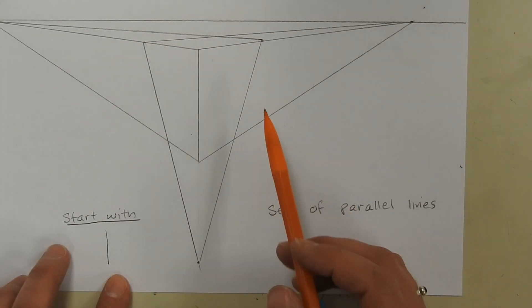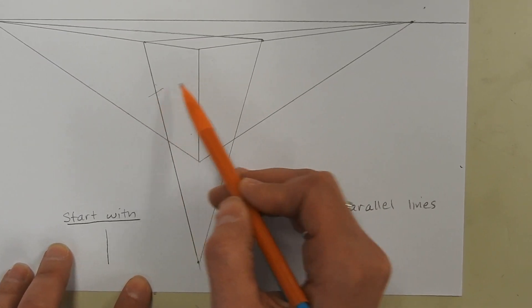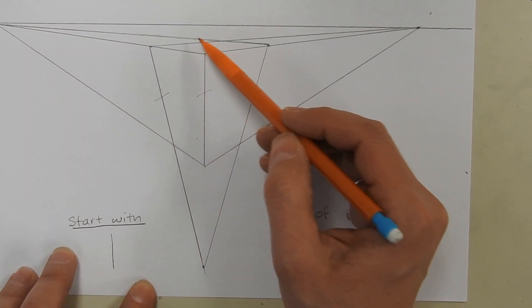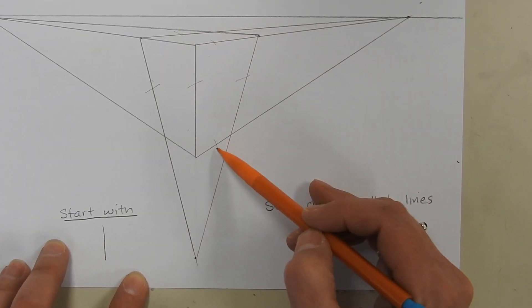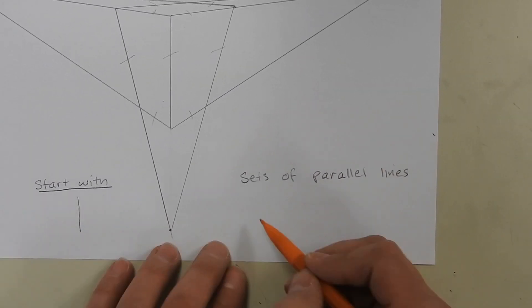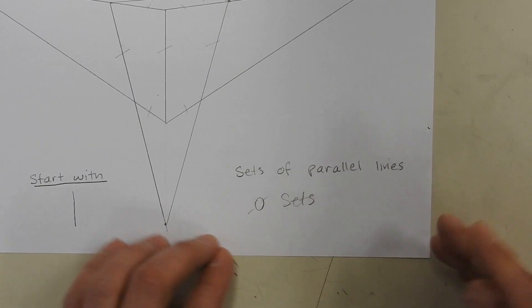And let's look at the parallel lines. We have these three, those are not parallel. We have these three, those are not parallel. And we have these three, those are not parallel either. So there are zero sets of parallel lines.